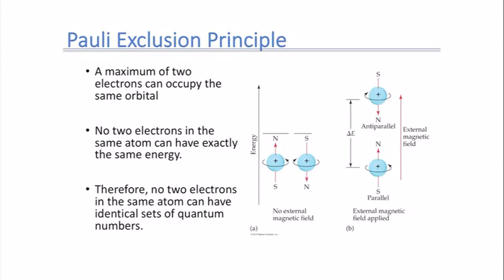The Pauli exclusion principle says that a maximum of two electrons can occupy the same orbital, but no two electrons can have exactly the same energy — they can't have the exact same quantum numbers. The last quantum number is the magnetic spin quantum number, or m sub s. This quantum number states that electrons can either spin in the same direction as the external magnetic field or opposite of it, so an electron can have a spin pointing up or a spin pointing down.